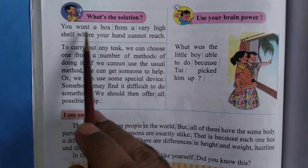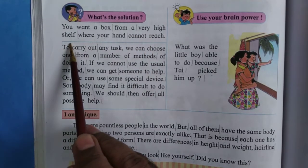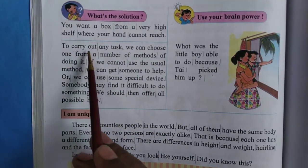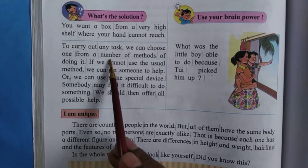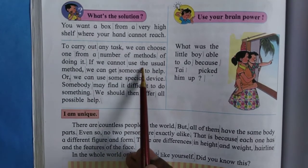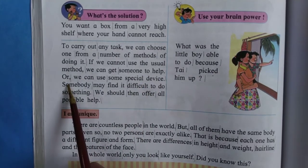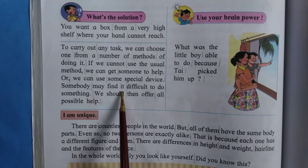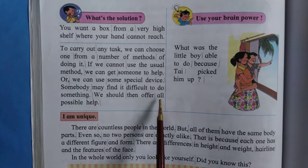What's the solution? You want a box from a very high shelf where your hand cannot reach. To carry out any task, we can choose one from a number of methods of doing it. If we cannot use the usual method, we can get someone to help or we can use some special device. Somebody may find it difficult to do something — we should then offer all possible help.